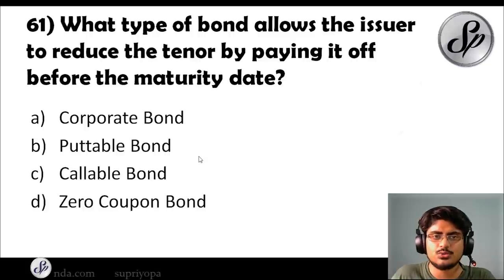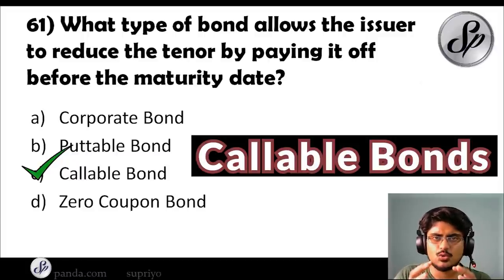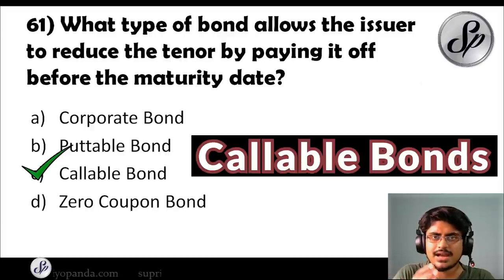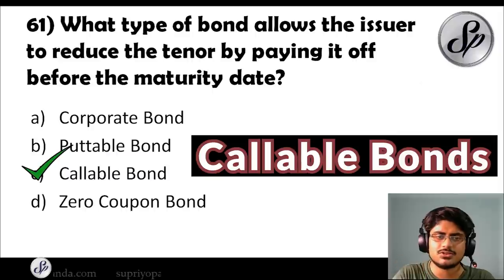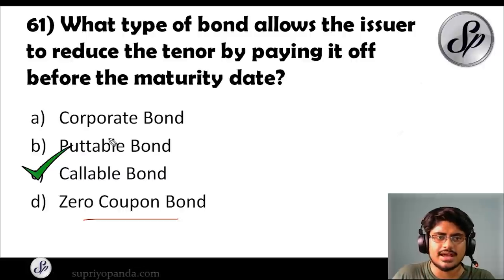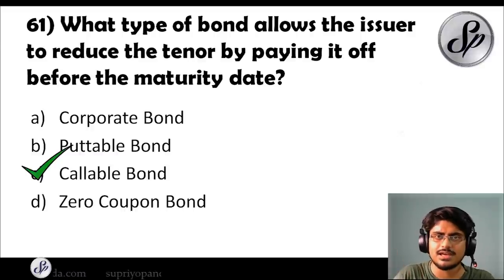Question sixty-one: what type of bond allows the issuer to reduce the tenor by paying it off before the maturity date? The answer is callable bonds. In a callable bond, the issuer can decide to pay back the maturity amount and outstanding interest before the term ends — a risk that the investor accepts. Also remember zero coupon bonds, which pay no interest, and putable bonds — all very important topics for SEBI Grade A and RBI examinations.